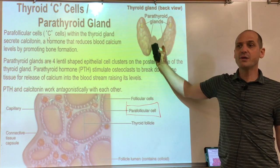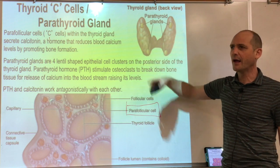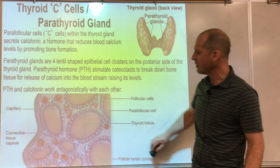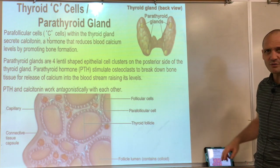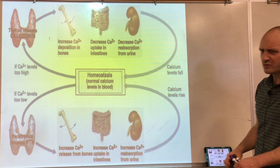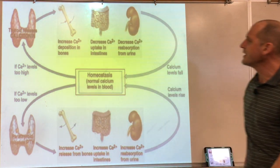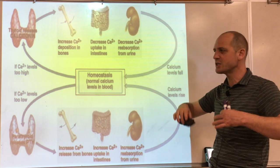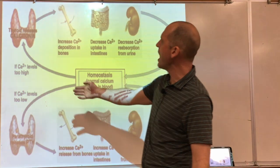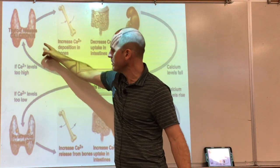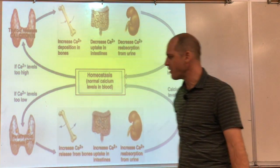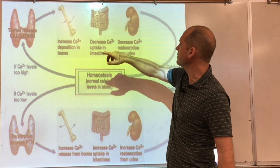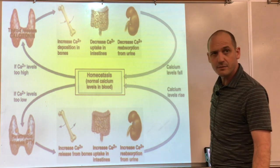These two hormones work in opposition to maintain precise blood calcium levels — essential for survival. When blood calcium is too high, calcitonin brings it down; when too low, parathyroid hormone raises it. This balance involves the bones, gut, and kidneys. Historically, surgeons who removed thyroid glands without realizing the parathyroid glands were there found patients died from disrupted calcium regulation.